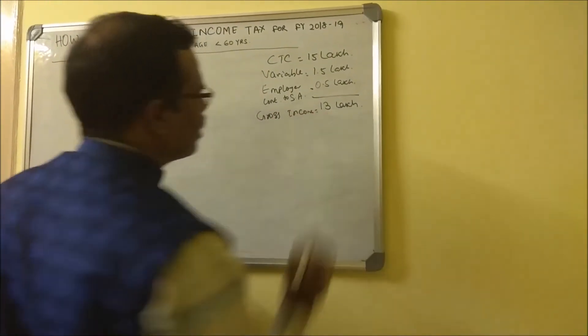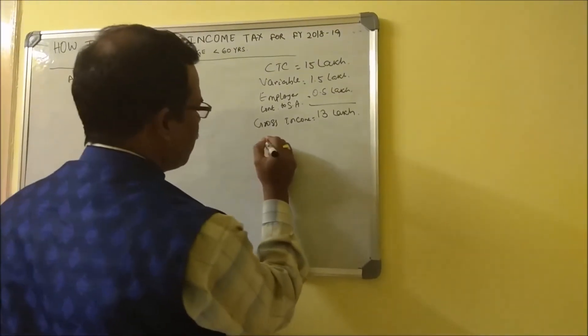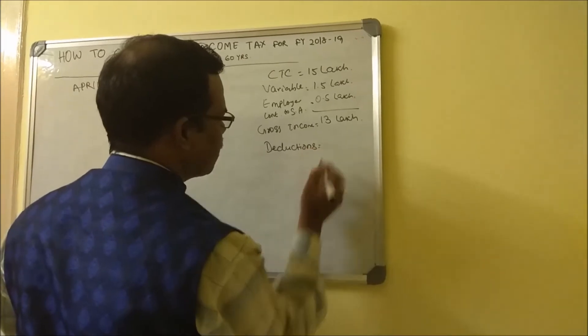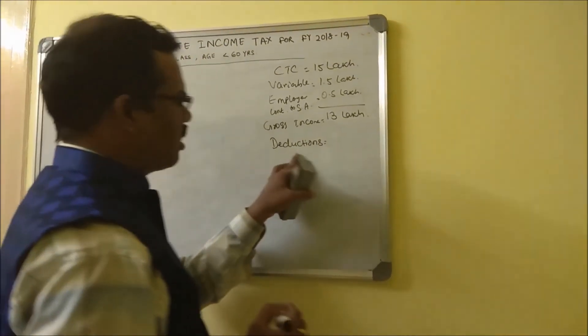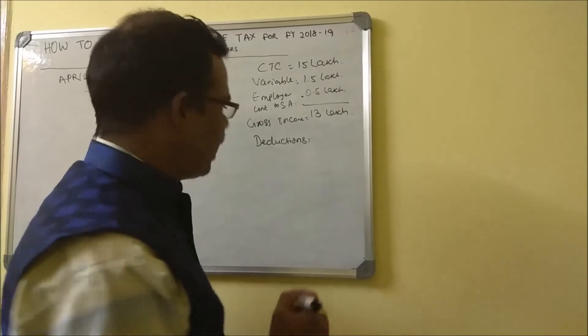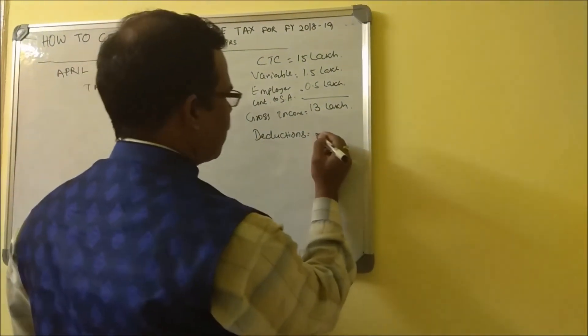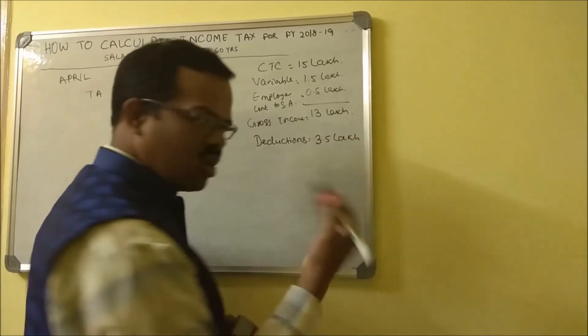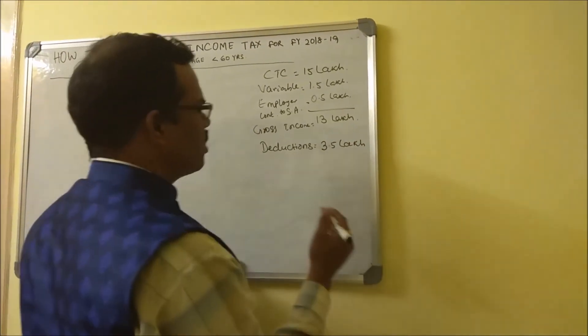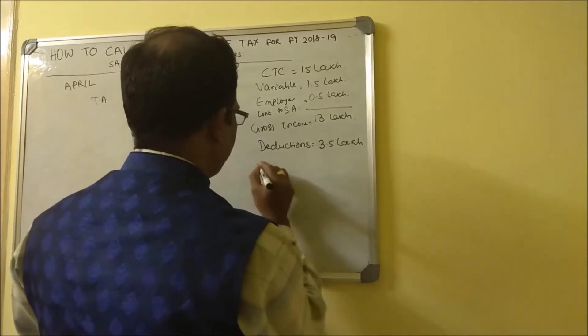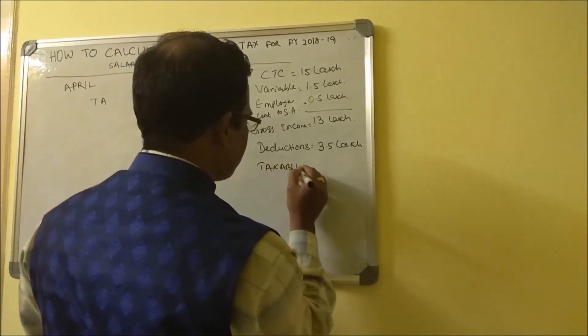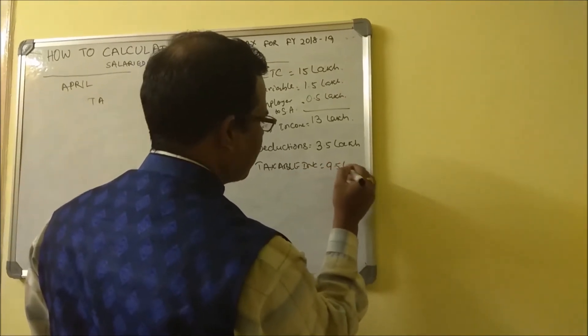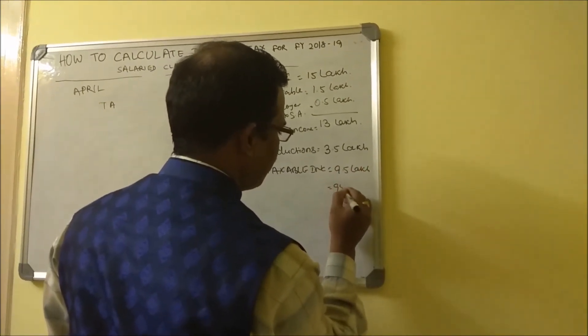Let's say you have all the deductions in terms of PF etc., as I mentioned I have already explained these deductions in another video. These deductions are let's say 3.5 lakh - it can go much beyond this but I am taking a conservative case. So taxable income is equal to 9.5 lakh or 950k.